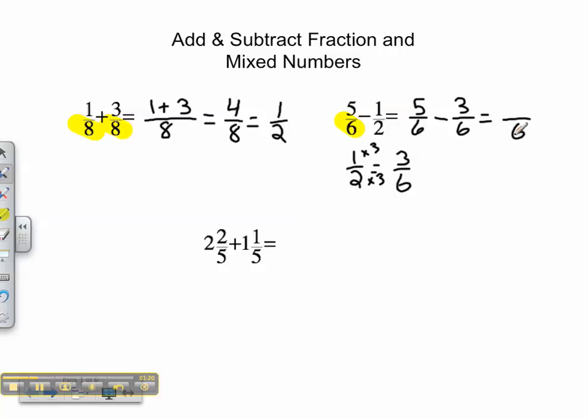The denominator stays the same. 5 minus 3 is 2. My final fraction is 2/6 or simplified to 1/3.